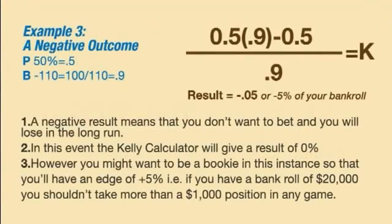Example 3: a negative outcome. Let's say your chances of winning a bet are 50% and the payout odds are minus 110. Then K is negative, so you shouldn't make the bet at all. A negative result means that you don't want to bet and you will lose in the long run. In this case, the Kelly calculator at SBR will give a result of 0%.